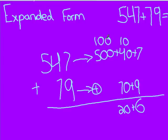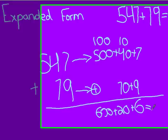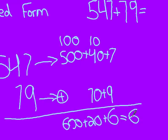Then you add 500 and 100, and that is 600. Then you add 600 plus 20 plus 6, and that is 626. That's your answer.